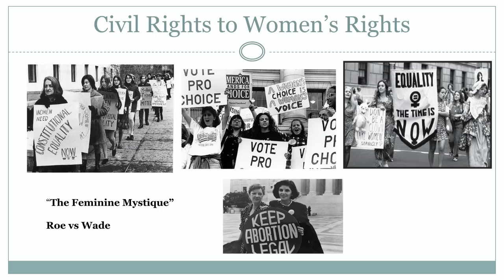The civil rights movement also led to the Women's Rights Movement. Women saw what was going on and saw their opportunity to take action as well. Many women participated in the civil rights movement, which led to the formation of the National Organization for Women. Key events during this period include the book the Feminine Mystique, which was about suburban housewives; the Civil Rights Act of 1964, which outlawed gender discrimination; the Supreme Court case Roe v. Wade, which protected abortions under privacy laws; and the Equal Rights Amendment, proposed to guarantee equal rights for women.